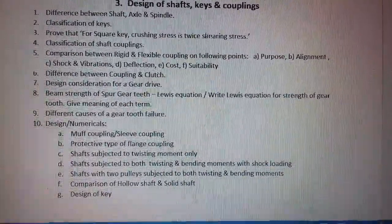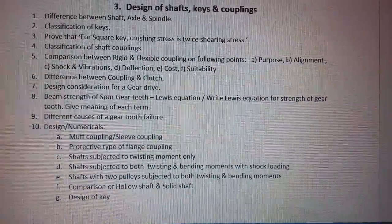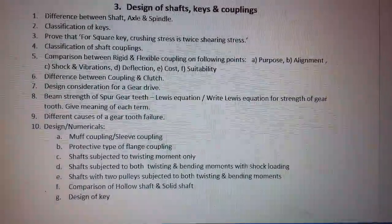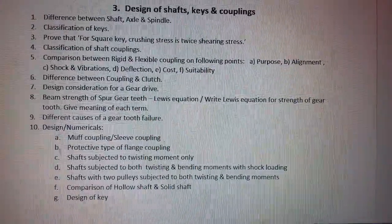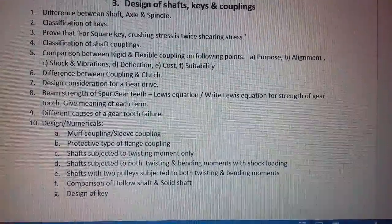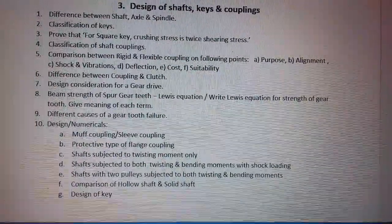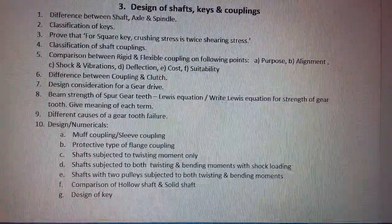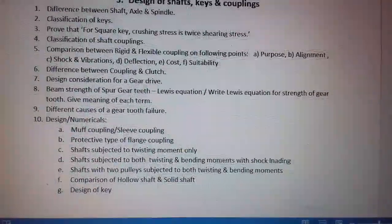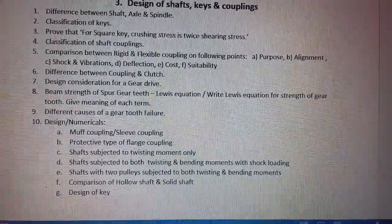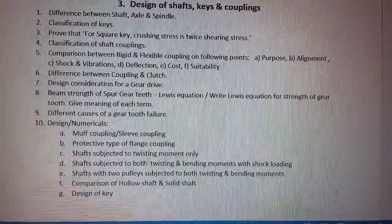Comparison between rigid and flexible coupling on the following points: purpose, alignment, shock and vibration, deflection, cost and suitability. Also: difference between coupling and clutch, design considerations for a gear drive, beam strength and force per gear tooth — that is Lewis equation. Write Lewis equation for strength of gear tooth and give the meaning of each term, and different causes of gear tooth failure.